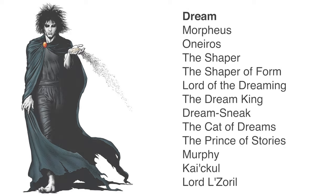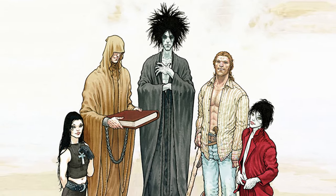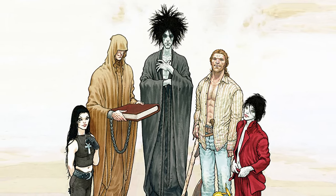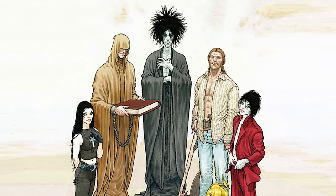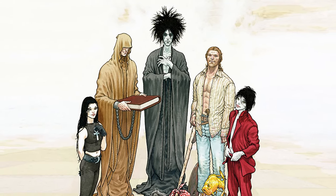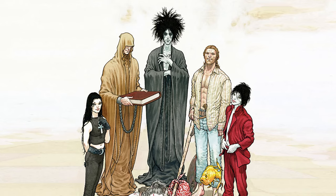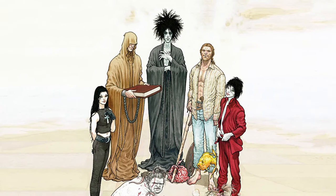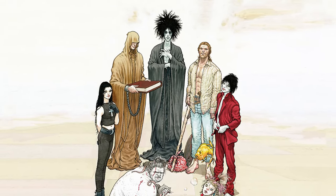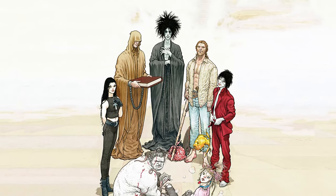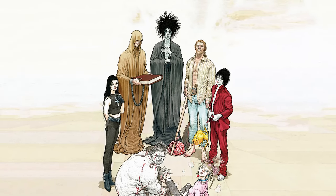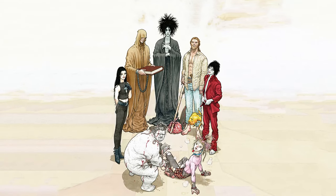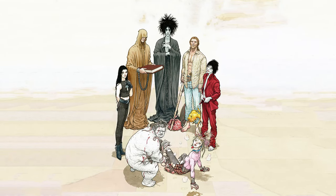Dream belongs to a family called the Endless — a powerful family of beings older than gods. They are mostly a somewhat dysfunctional family of seven siblings, each the personification of ideas and concepts tied to life, fated to fulfill their functions until the universe ends and all life disappears from the cosmos.